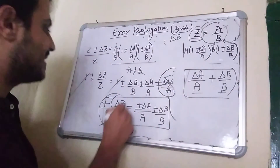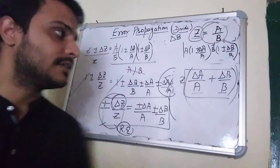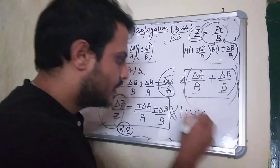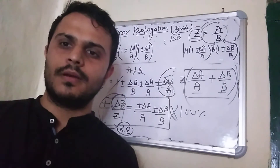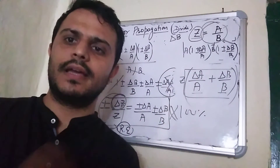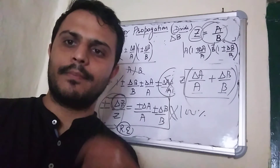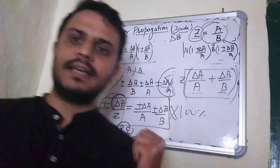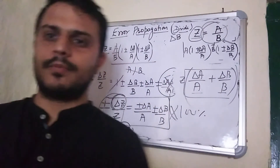You can also find the absolute error by multiplying both sides by Z. If you want percentage error, just multiply the expression by 100%. This result indicates that when the result involves a quotient A/B, the relative error in Z equals the sum of the relative errors of A and B — the same result as in the product case. I hope you understood the derivation of error propagation. Thank you very much.